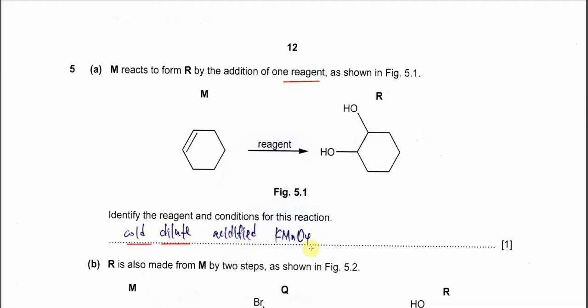So the diol will produce from this C=C double bond. This one is very easy.